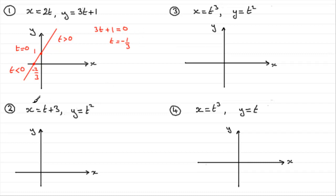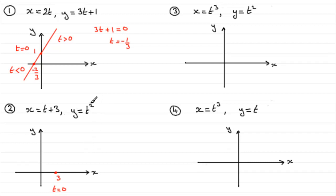Now let's look at number 2: x equals t plus 3 and y equals t squared. We start off with t equaling zero. When t equals zero, x will be 3 and y will be zero, so (3, 0) is the point when t is zero. For the branch when t is greater than zero, x is going to start moving to the right from 3, giving values of x more than 3. But y is always going to be positive because it's squared, and y is to the power 2 compared to x which is power 1, so y is going to rise at a quicker rate than we move in the x direction.